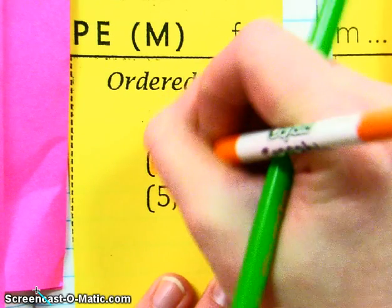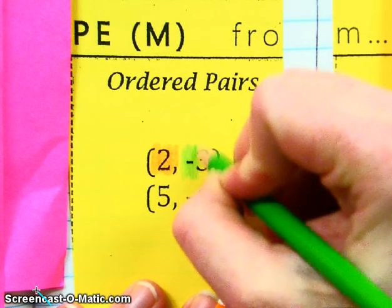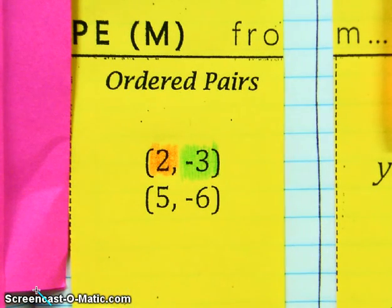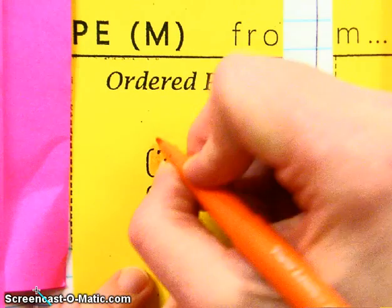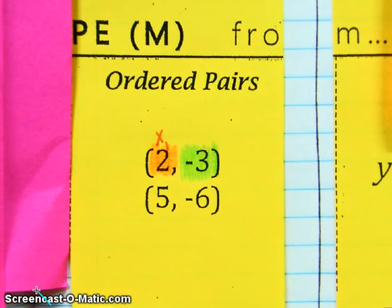And this one right here, that 2, is actually an X, and this negative 3 is a Y. So this is X1, we can call it X1, and this is Y1.